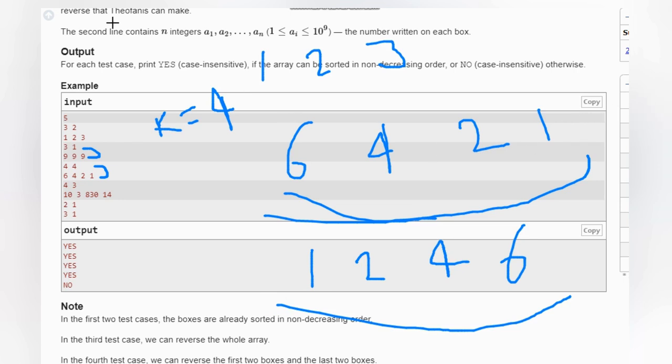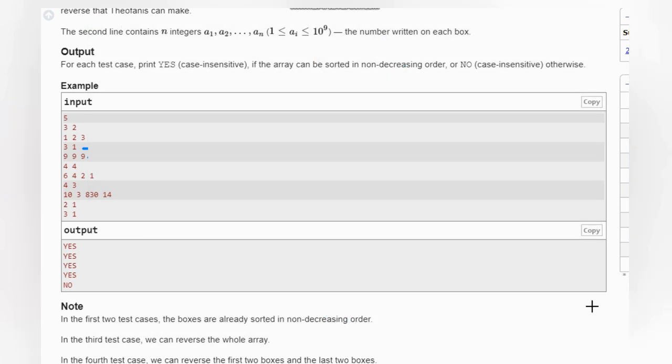I will discuss a more difficult case. We have 10, 3, 8, 30, and 40, and here k is 3. That means we can reverse three elements maximum, or we can do one or two elements - that is our choice. We need to make it sorted, so what can we do?